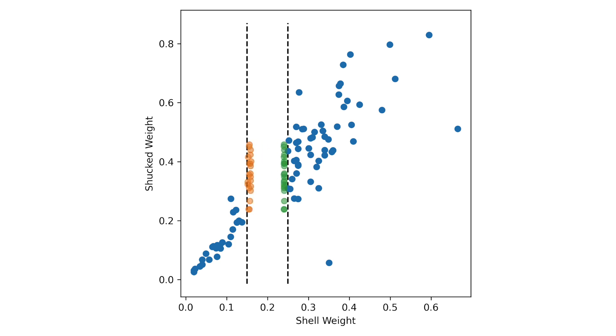This is the idea that ALEs are based on. To avoid the correlation, we can determine the effect of shell weight within this interval. To do this, we create two samples from every instance in the interval. They are created by replacing their shell weight value with the minimum and maximum shell weight values in the interval. All the other feature values remain the same.